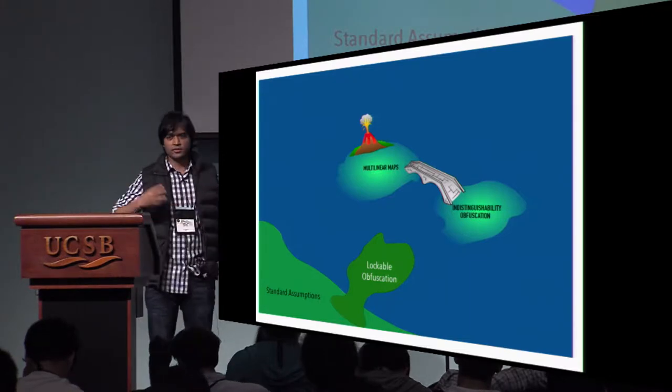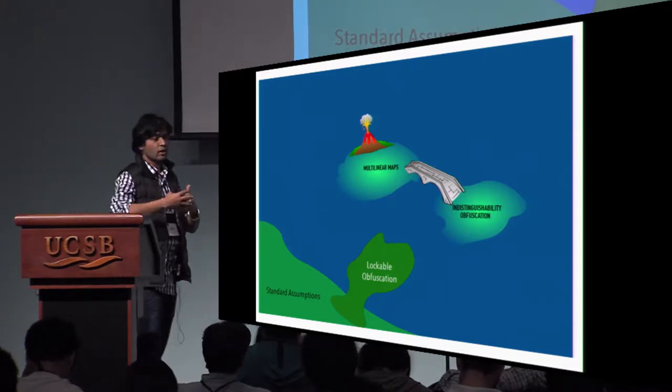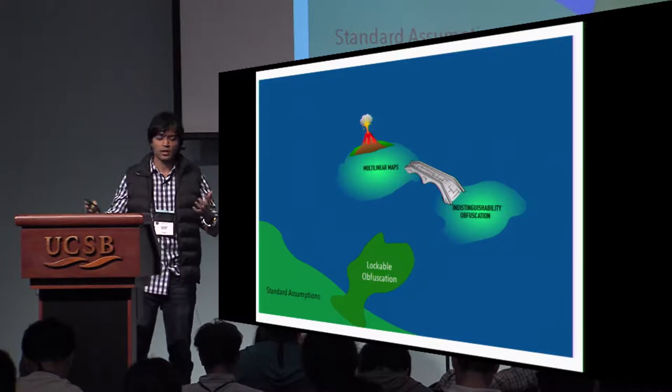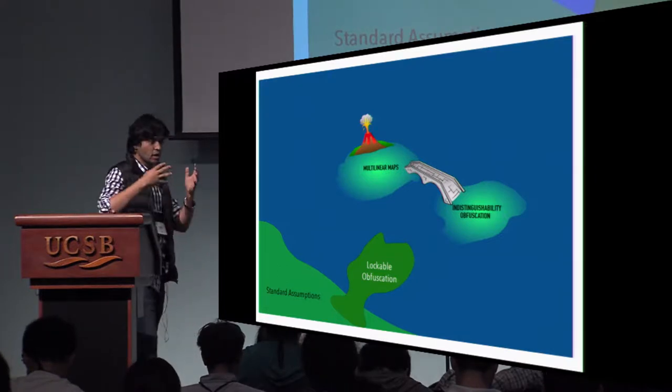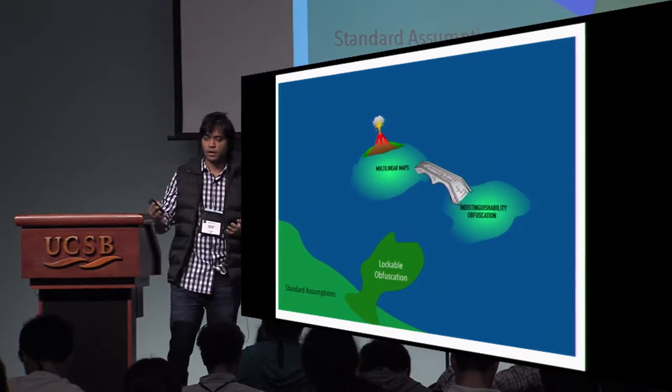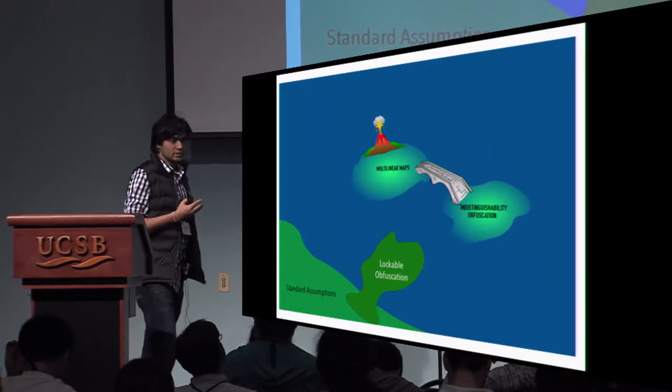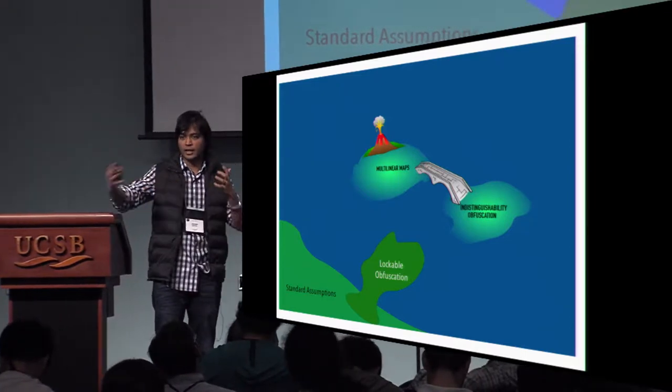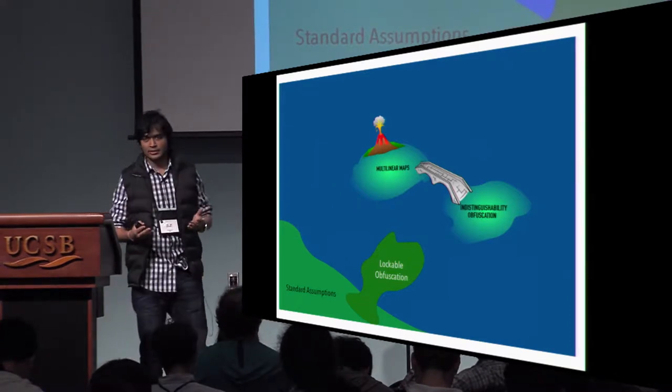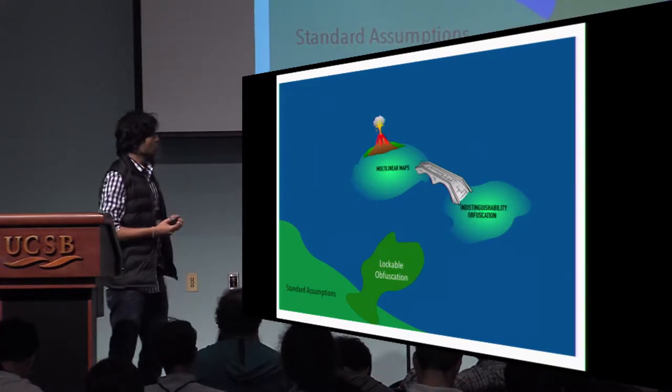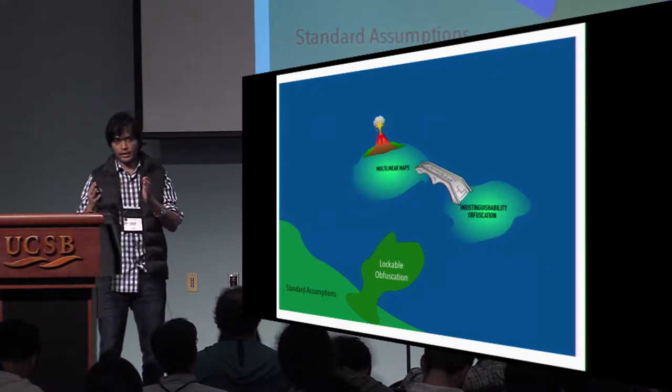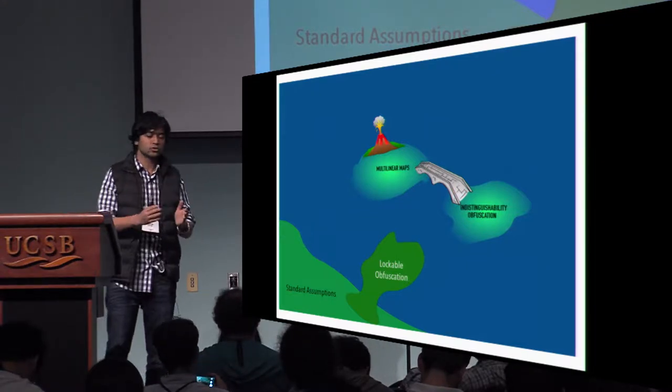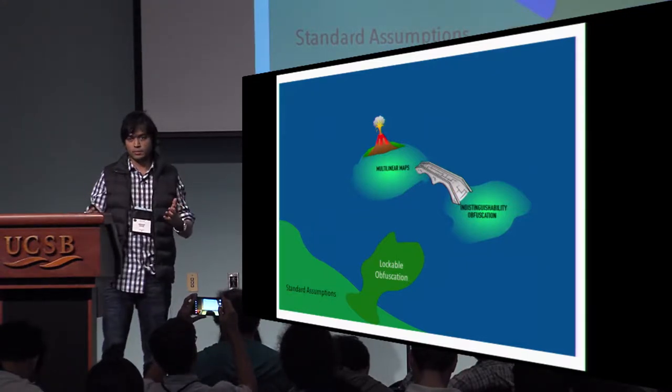When obfuscation was introduced, it was not known whether obfuscation could be constructed for general programs. And Barak and I showed that virtual black box obfuscation is impossible. But with the introduction of indistinguishability obfuscation, we have seen tremendous attention by the cryptography community. Starting with the work of Sahai and Waters, we have seen how indistinguishability obfuscation could be used to solve various open problems in cryptography.